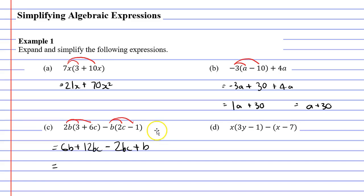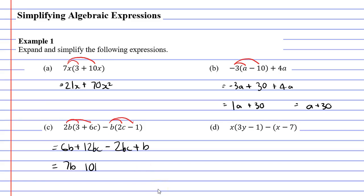We also need to simplify this expression. We're looking for terms with the exact same set of pronumerals. We've got 6B, the two middle terms have BC, and the one at the end has B. So 6B plus B gives us 7B. And in the middle, 12BC minus 2BC gives us 10BC, which is also positive — so we put the plus sign, giving us 7B plus 10BC.